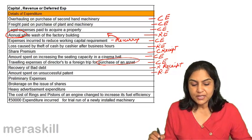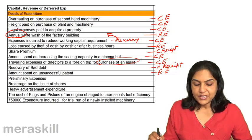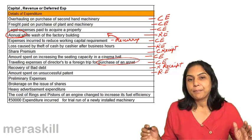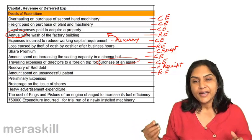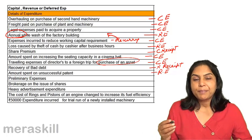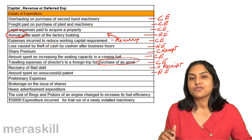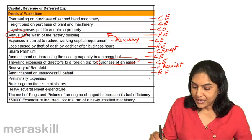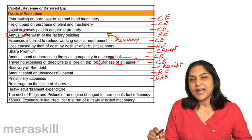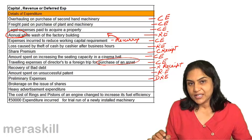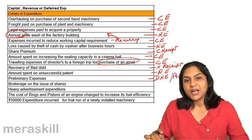Preliminary expenses are the expenses in setting up a company — a huge amount of work. Since the company is intended to last for a long time, the preliminary expenses were charged over the first few years of the company's life. This was actually a deferred revenue expenditure. However, as per AS26, now everything is supposed to be written off to the profit and loss account.